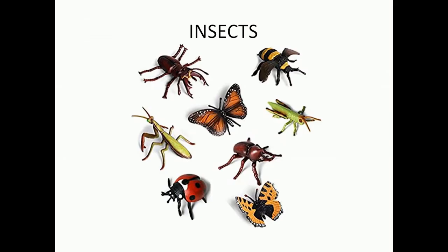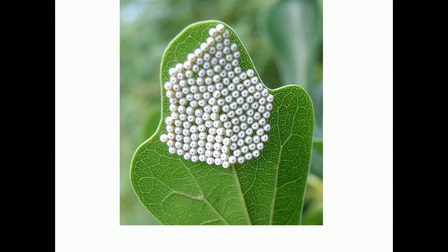Now we shall move on to insects, which is the last part of the chapter. Did you know that about 75% of all living things on this earth are insects? There is a wide variety of insects — we can see many even around us, in our garden or even inside the home, during the day or night. An insect is an animal that has wings or antennae and six legs, but they don't have backbones. All insects lay eggs to reproduce.